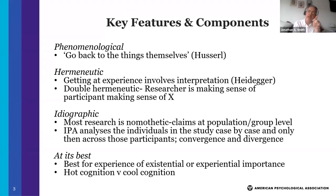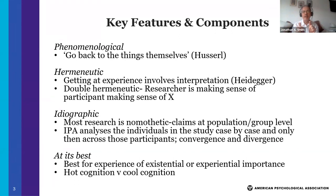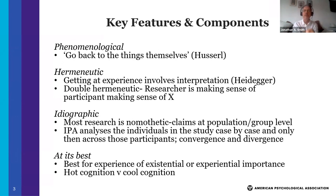IPA invokes a double hermeneutic, where researchers are trying to make sense of participants trying to make sense of X. Both researcher and participant are in the business of making sense, and I think that's quite nice because it shows it as an alliance. The researcher's sense-making draws on the same basic human skill set as participants are doing themselves, but at the same time the researcher's sense-making is always second order - we are dependent on the account from the participant to do our own sense-making.